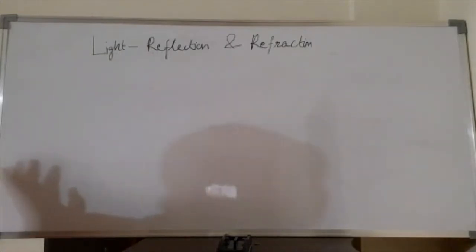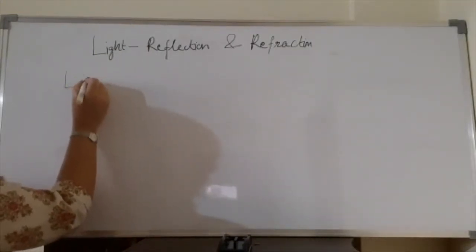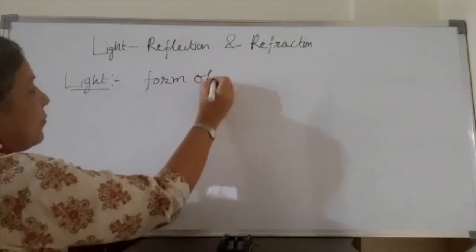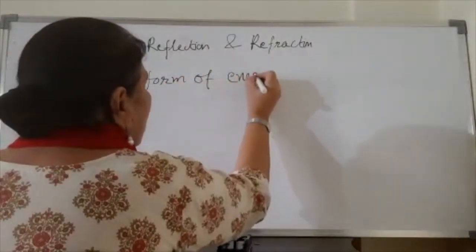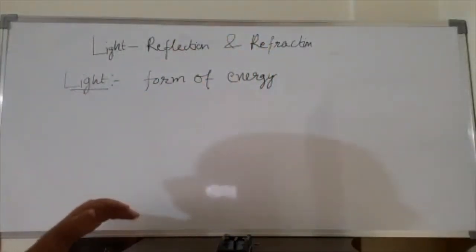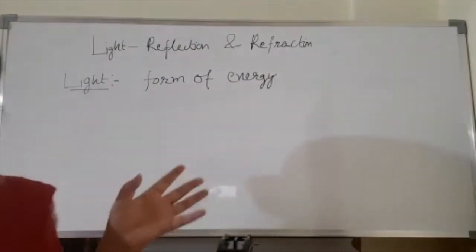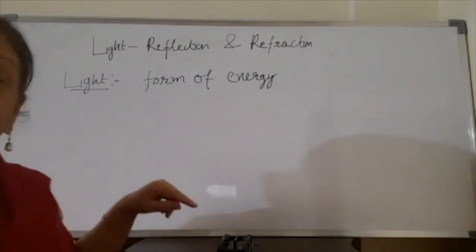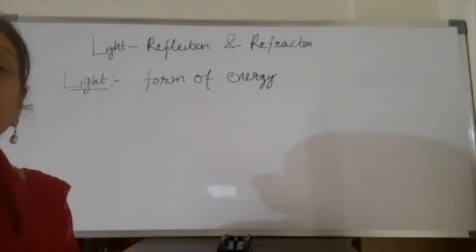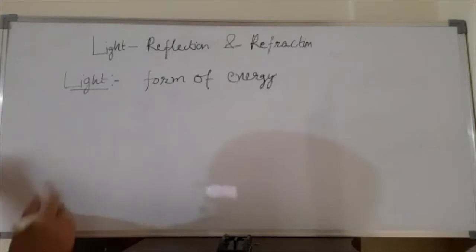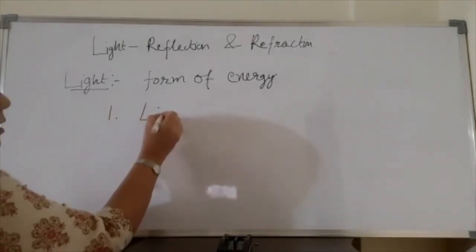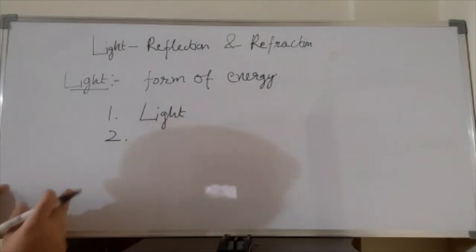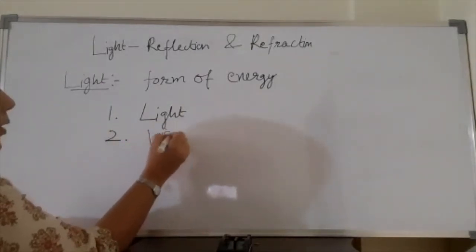So what exactly is Light? If someone asks you, what is Light? It's a form of energy which makes everything visible to us. So light from an object, when it reaches our eyes, we are able to see the objects around us. So either the light should come from an object or it should be reflected from an object. What are the two important things which are needed? One, light which allows us to see any object, and two, the vision or the eye.